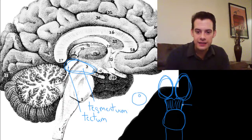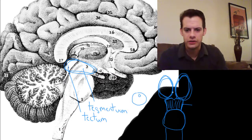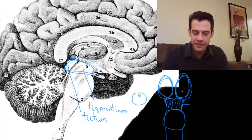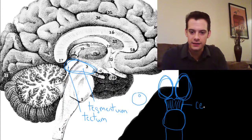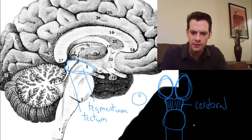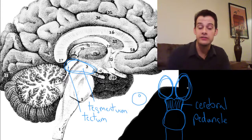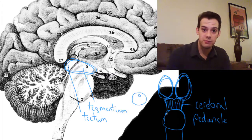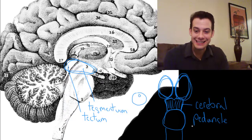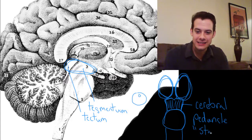And as sort of a side note this section leading up to the thalamus here is called the cerebral peduncle. And I bring this up for two reasons and the first is that I like saying peduncle. It's a fun word.